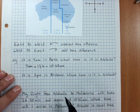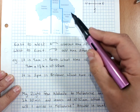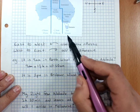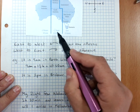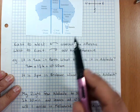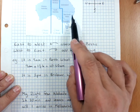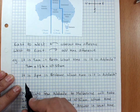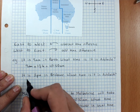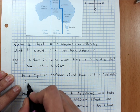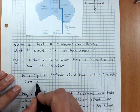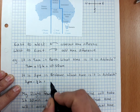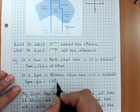If it's 2 p.m. in Brisbane, what time is it in Adelaide? It's half an hour difference, and I'm going from East to West, so I subtract the time difference. 2 p.m. minus half an hour means it's 1:30 p.m.